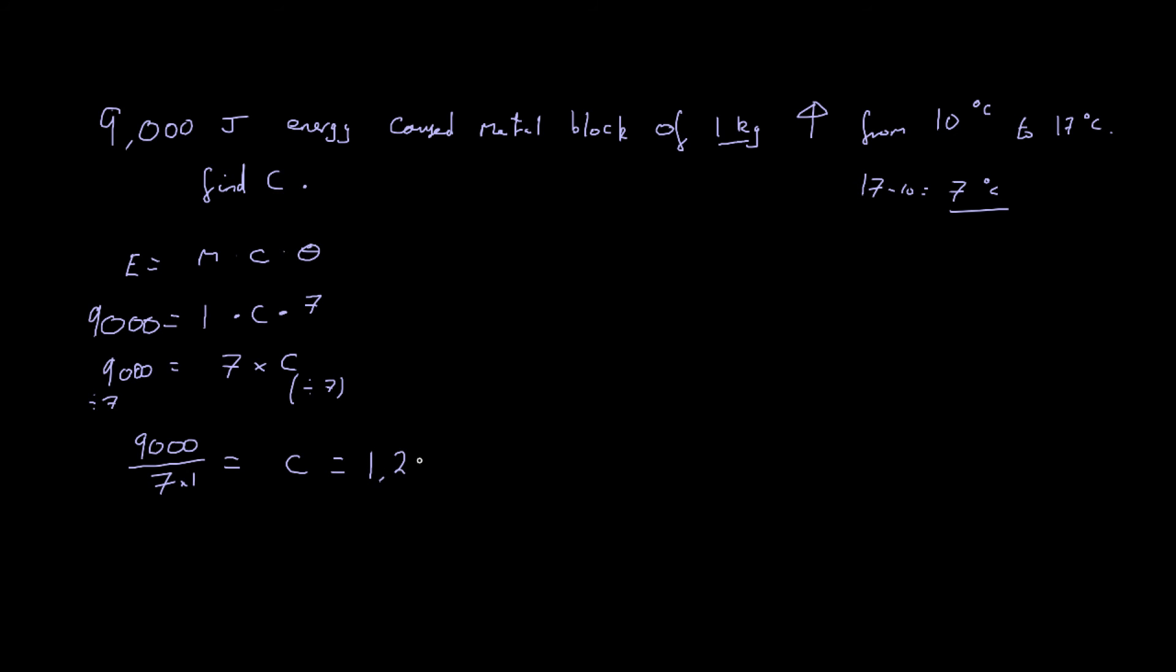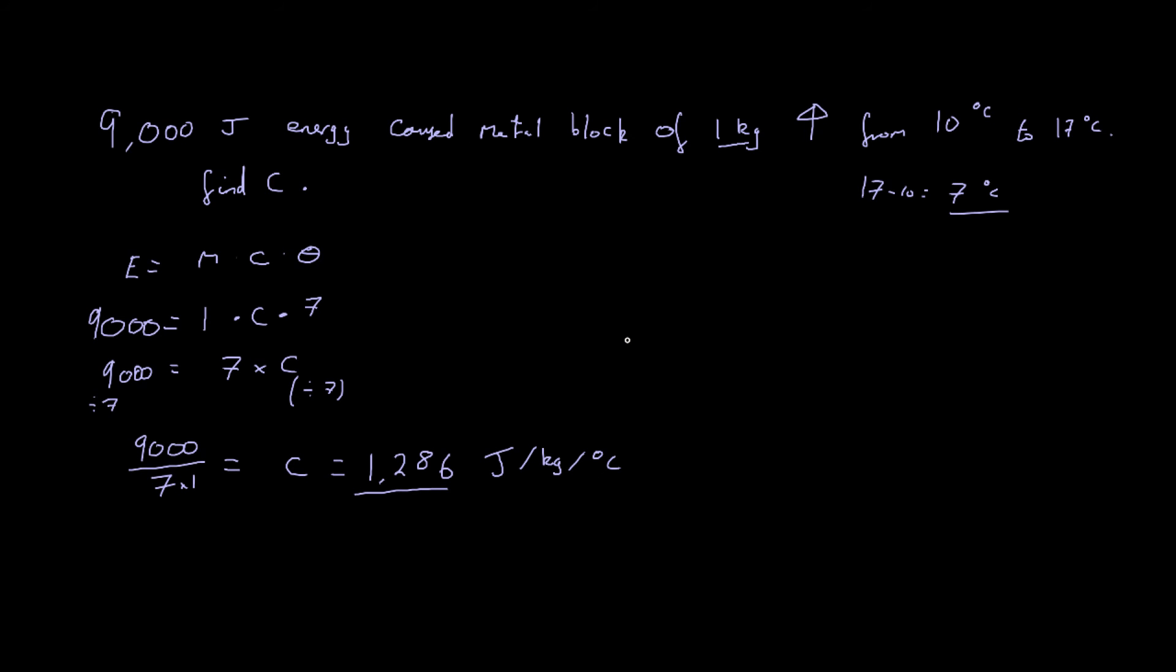So if I was going to round that to the nearest joule, it would round up to 1,286. And that is joules per kilogram per degree Celsius. Okay. And so this would be our specific heat capacity of our unknown metal. Okay. So that's just another example of how they can word the questions. You need to be able to rearrange to find anything if you are given the rest of the information. Okay. Perfect.